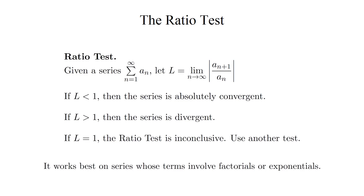As for why it works, I won't give a detailed explanation today, but you can kind of understand how it works by thinking about what the limit of that ratio represents intuitively. The limit represents what the ratio of a sub n+1 over a sub n approximately equals for large values of n. If that ratio is less than 1, then it's essentially saying that for large values of n, the series resembles a geometric series whose r value is less than 1, and hence convergent. But if that ratio is greater than 1, then for large values of n, the series resembles a geometric series whose r value is greater than 1, and hence divergent.